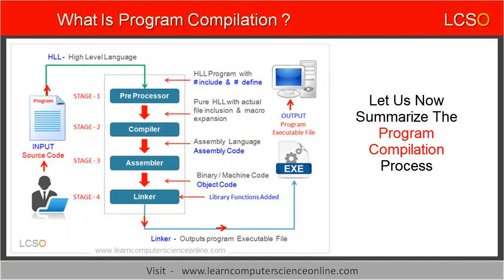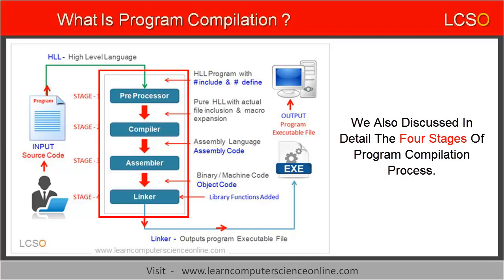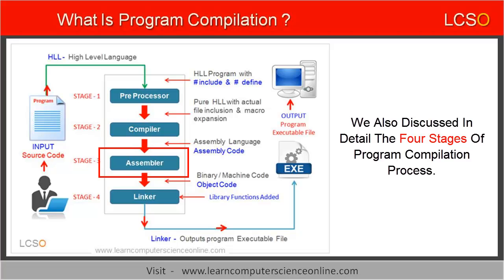Let us now quickly summarize the program compilation process. Program compilation is defined as the process of translating high-level program code into low-level machine code instructions in binary, using a special software called the compiler. We also discussed in detail the four important stages of the program compilation process: first, the pre-processing stage; second, the compilation stage; third, the assembly stage; and finally, the linking stage.